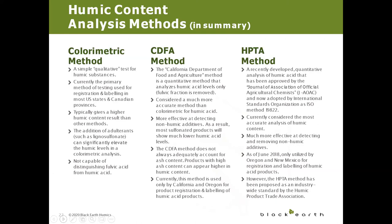Last but definitely not least, we have the HPTA method—the Humic Product Trade Association method—which is currently considered the most accurate testing method to determine humic and fulvic content. It is a quantitative analysis and has now been approved and adopted by international standards, which is why Black Earth uses this method for testing on all of their products.